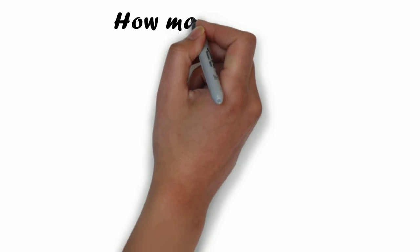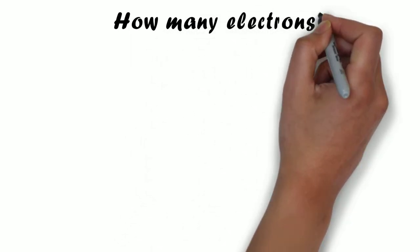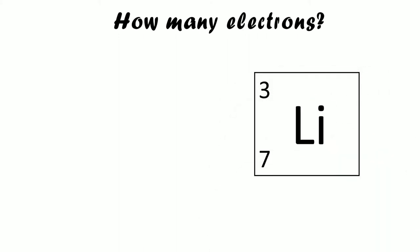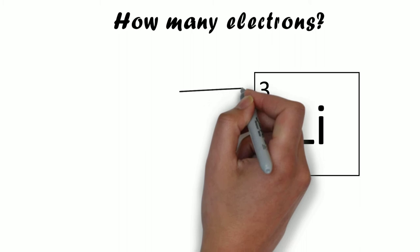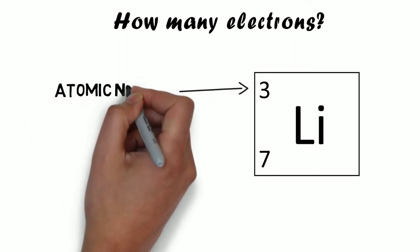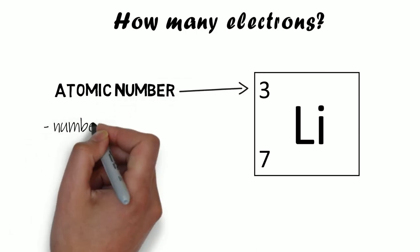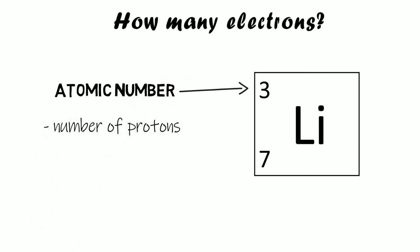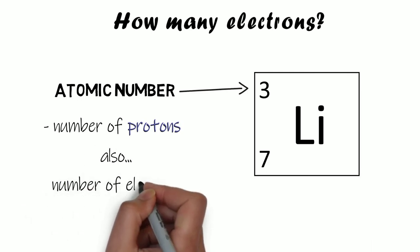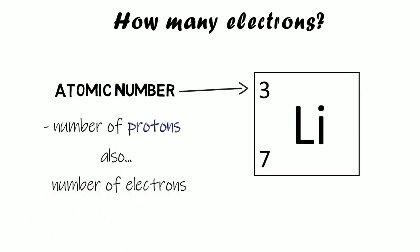The first thing we need to know in order to draw the electronic structure — that's how the electrons in an atom are arranged — is we need to know how many electrons an atom has, and we do this using the periodic table. For each element symbol there are two numbers. The small number is what we call the atomic number, which tells us the number of protons. But in an atom, because it has no overall charge, the number of protons and the number of electrons are the same. So that small number also tells us the number of electrons.